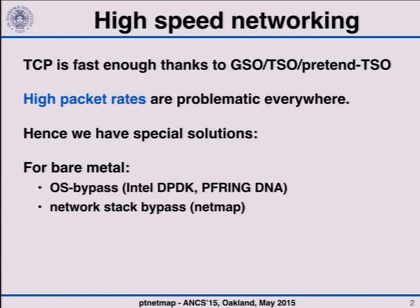Either to bypass the entire operating system, like Intel DPDK or PF_RING in DNA, or in the NetMap case, to bypass only the network stack. This is done because high packet rates are typically needed in applications which need direct access to packets coming on the network, and typically don't need all the processing done by the network stack.